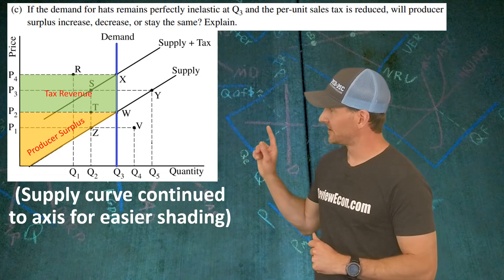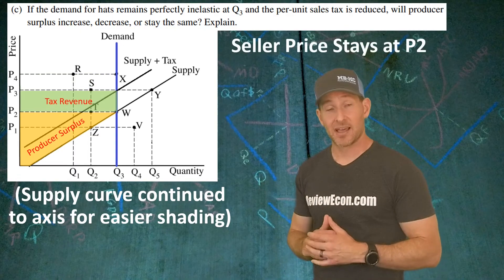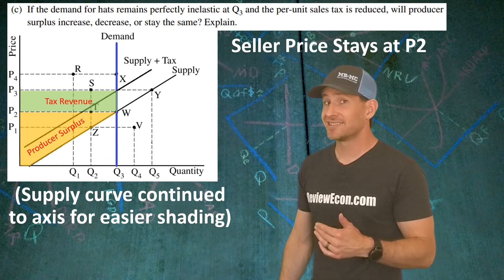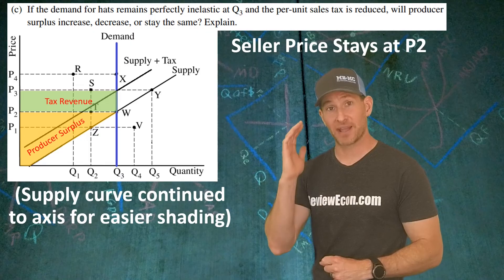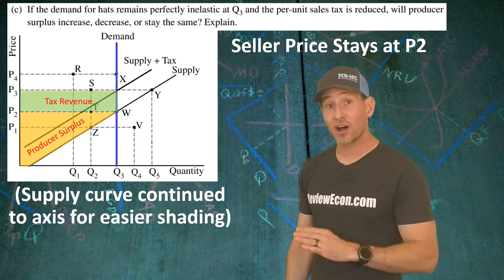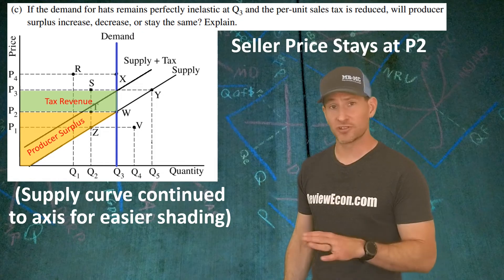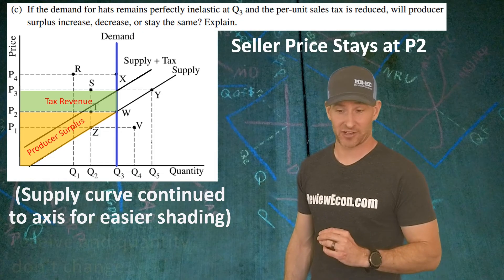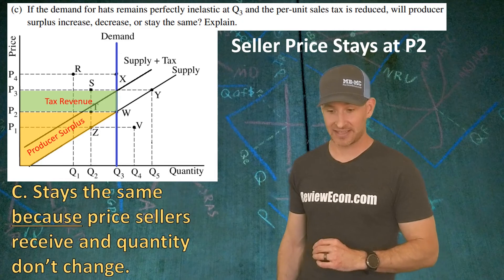the amount producers receive for selling this good doesn't actually change because that vertical demand curve shows that the entire tax burden goes on to consumers. The producer has no tax burden when facing a vertical demand curve. And so,